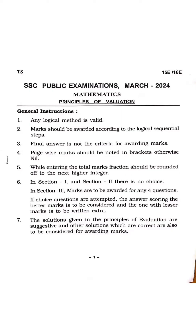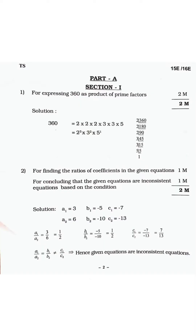Now, Section 1, Part A. For Question 1 — expressing 360 as a product of prime factors — if you are doing prime factorization, for example 2³ × 3² × 5, if you are writing directly the answer you will not get the marks. You have to do the whole problem.